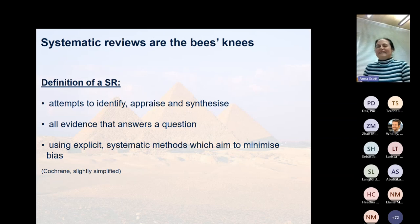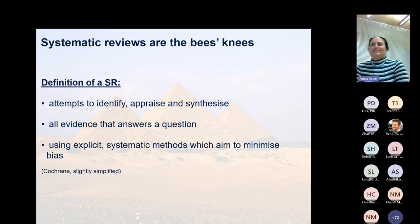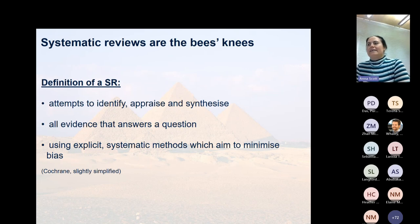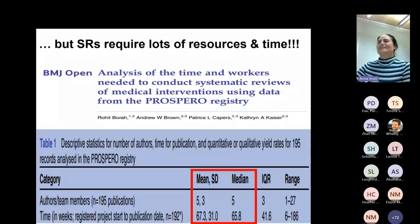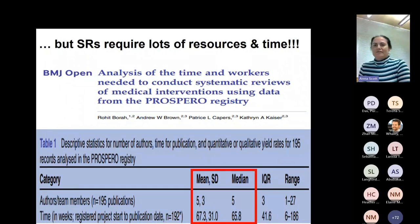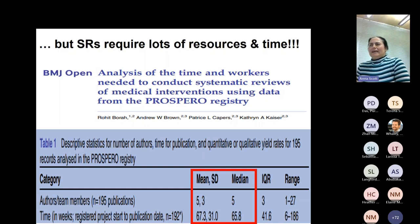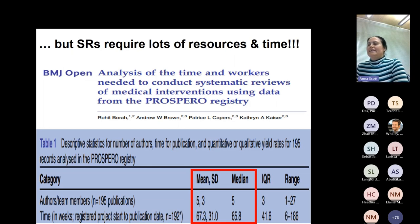Systematic reviews are pretty cool. Using a Cochrane definition, they attempt to identify, appraise and synthesize all the evidence that answers a question using explicit systematic methods which aim to minimize bias. The pyramid background is deliberately chosen because there's a lot of work involved. From an analysis by Rohit Bora and colleagues about six years ago, looking at 195 protocol registrations in PROSPERO, it takes around 66 to 67 weeks to do a systematic review.